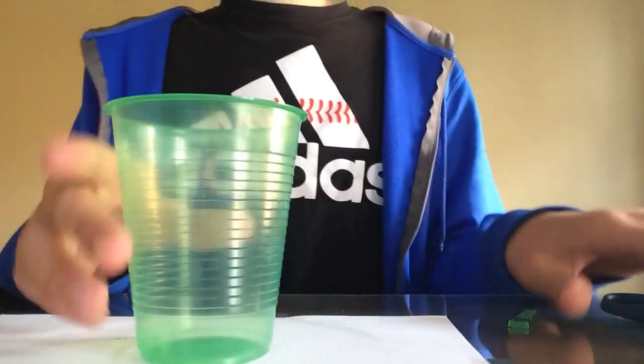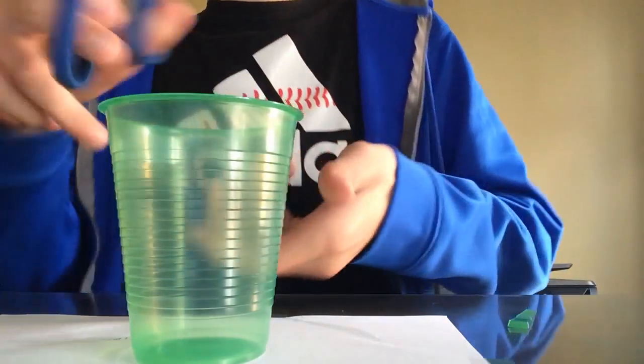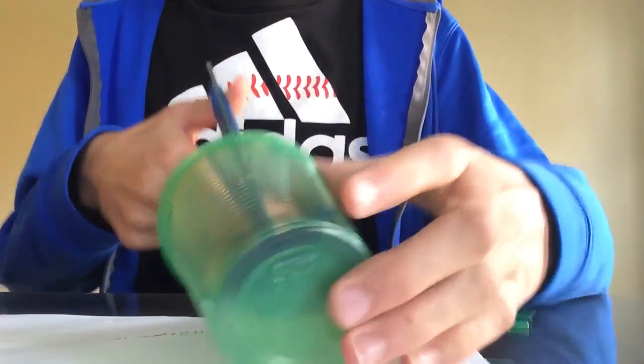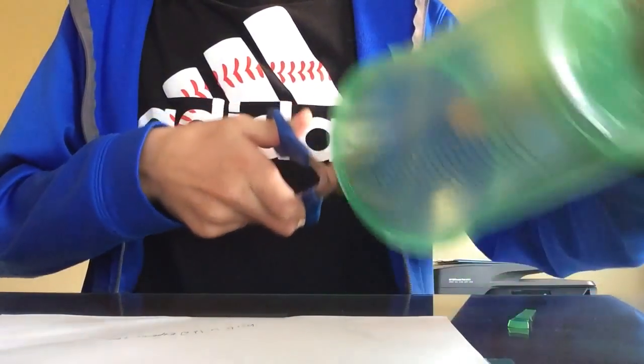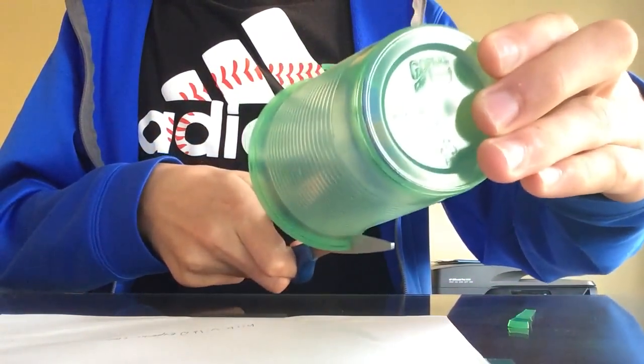So first what you want to do is take your scissors and cut two lines as evenly as you can down the center of the cup on both sides.